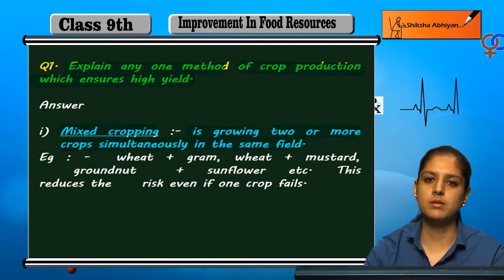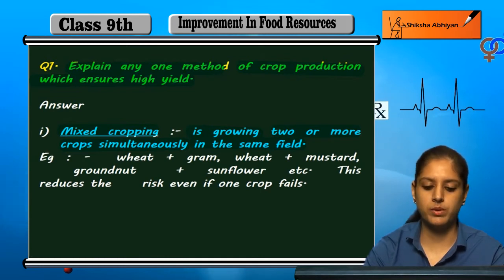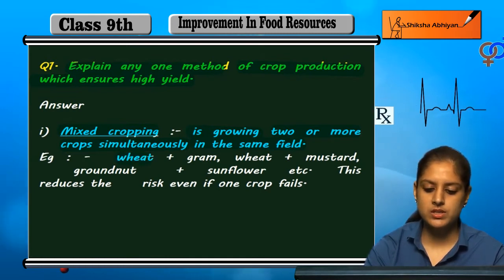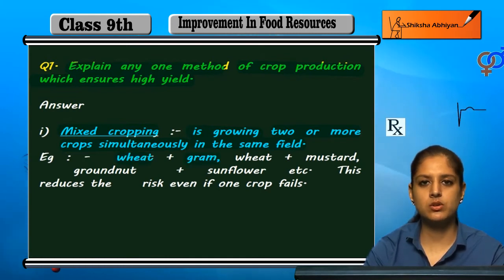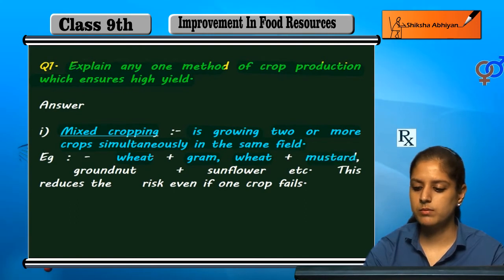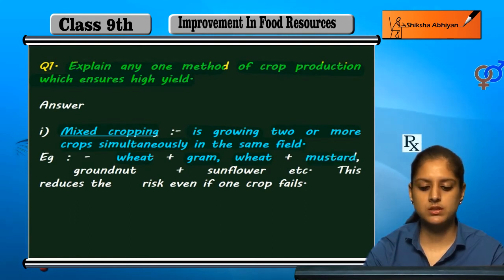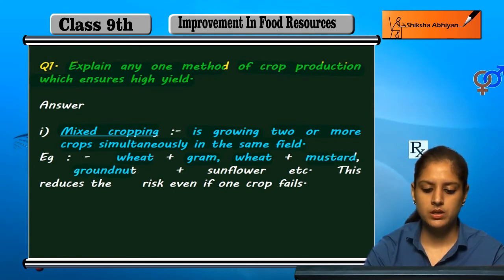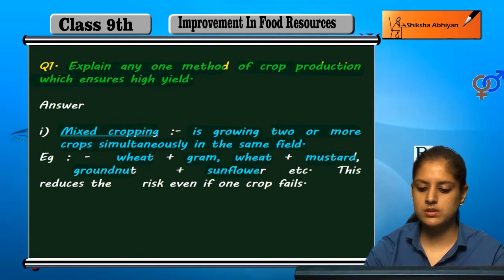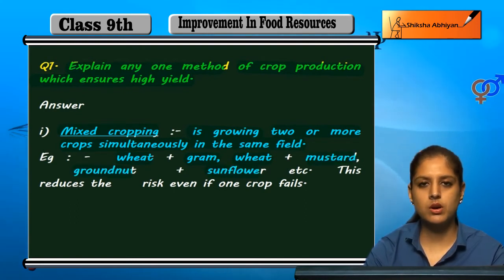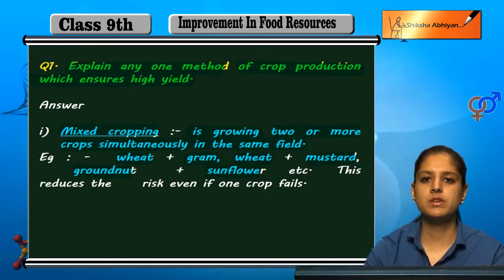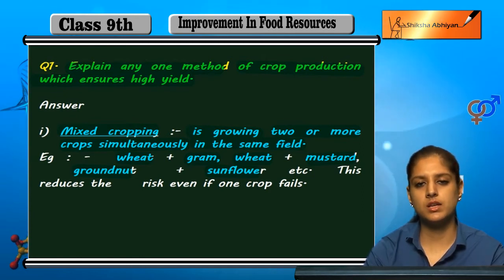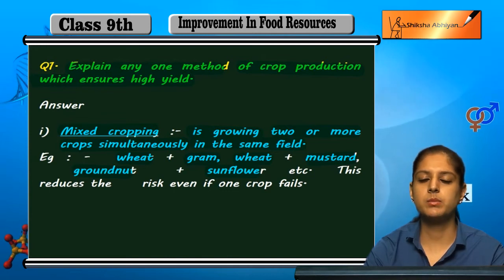For example, wheat and gram can be grown together, wheat and mustard can be grown together, and groundnut and sunflower can also be grown together. Like these pairs, when two or more things are grown at the same place, that is called mixed cropping.